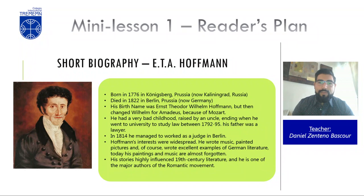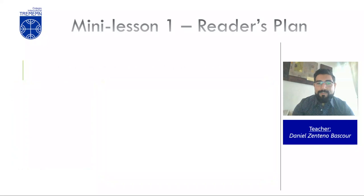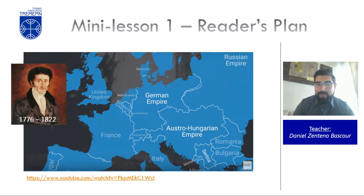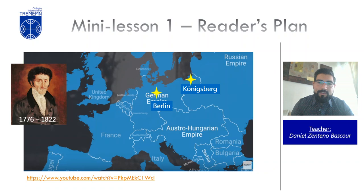Now let's have a look at the biography. You have worked on the biography in the first worksheet we've done. Hoffmann was born in the German Empire, in the Kingdom of Prussia, in a city called Königsberg — nowadays Kaliningrad, a city in Russia. He died in Berlin, the modern-day Berlin in Germany.